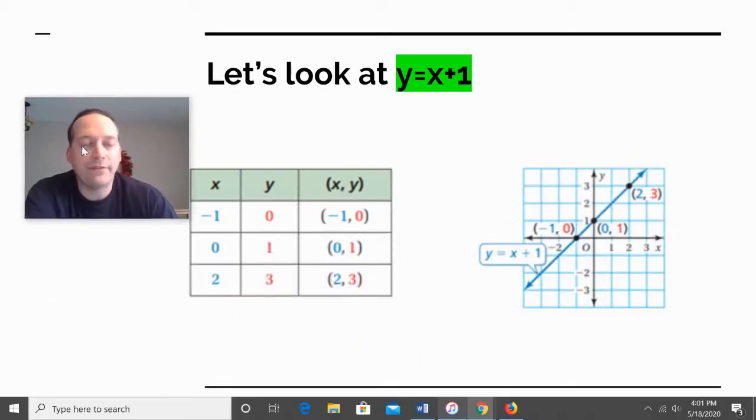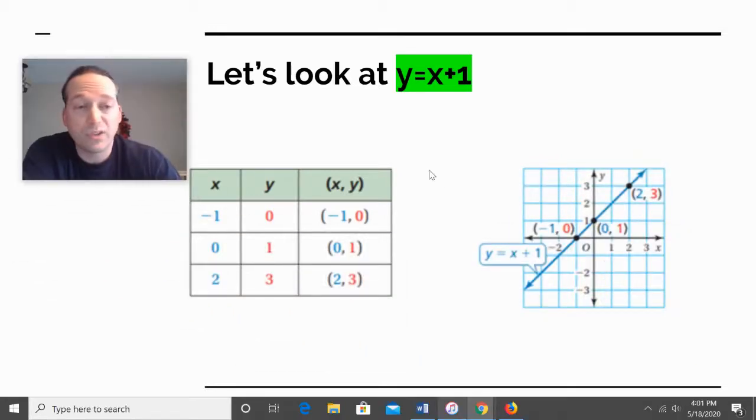And then what we do to graph it is on your coordinate grid, super easy. We just have your X and your Y coordinate and we label. Now you don't always have to label every number, you can do every other. But then what you do is you just plot these points. So I'd plot negative one, zero, zero, one, two, three. And then I just draw a line connecting those three points. Not very complicated.